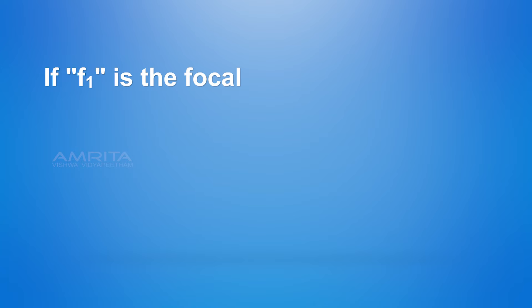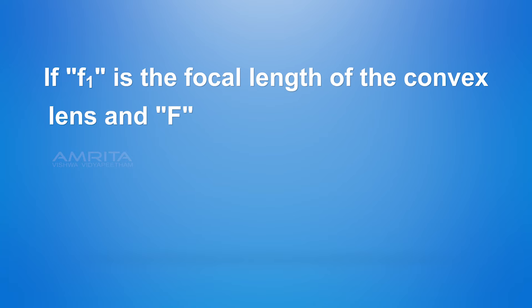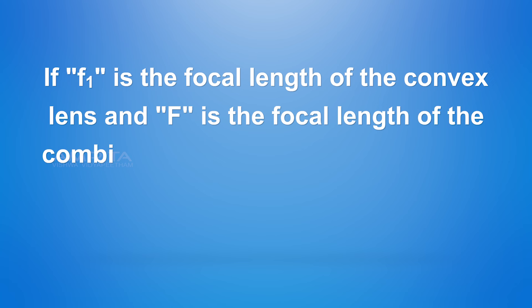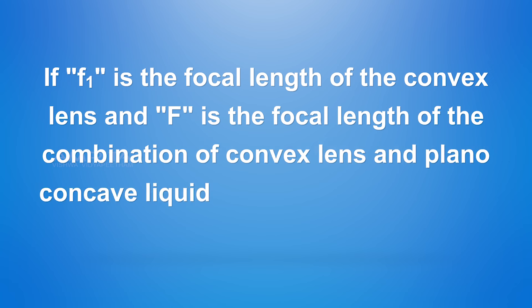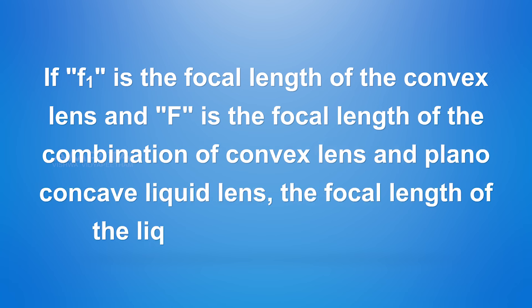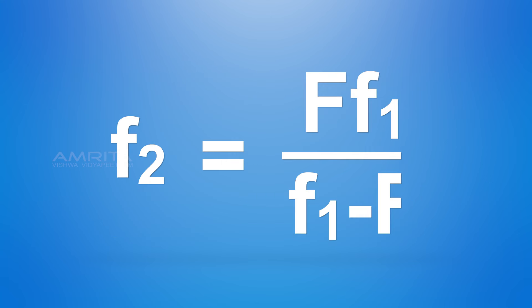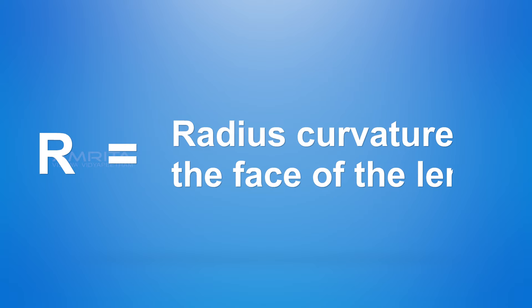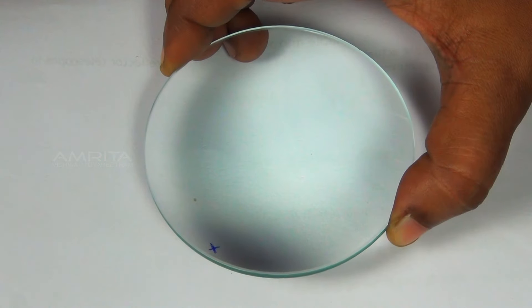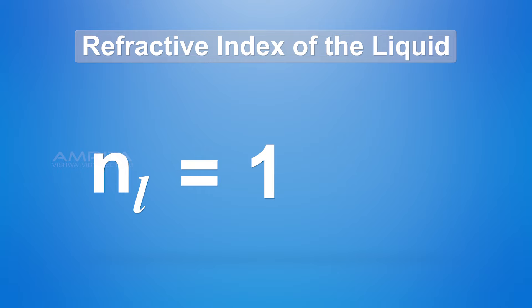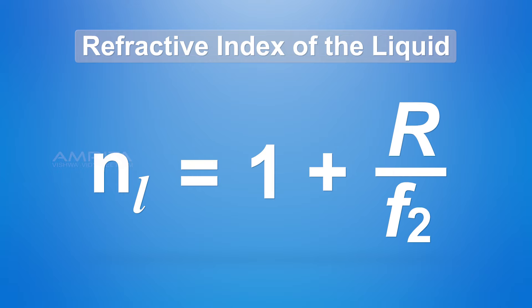If F1 is the focal length of the convex lens and F is the focal length of the combination of the convex lens and plano-concave liquid lens, the focal length of the liquid lens F2 is given by: F2 = (F × F1) / (F1 − F). If R is the radius of curvature of the face of the lens in contact with the liquid, then the refractive index of the liquid is: NL = 1 + R / F2.